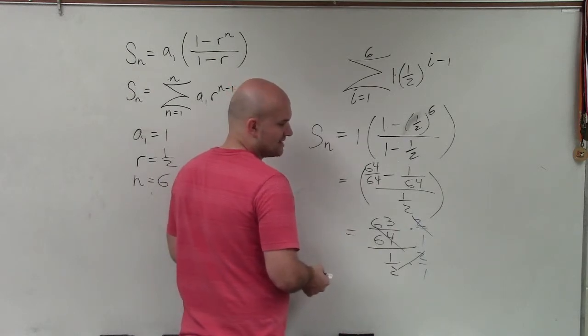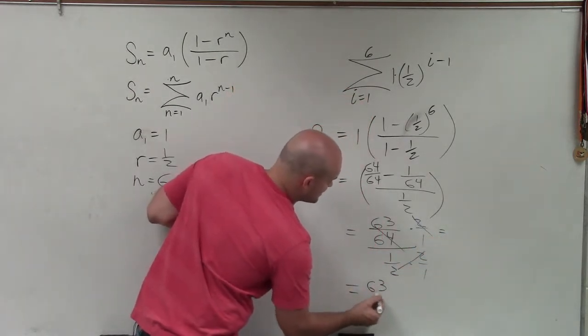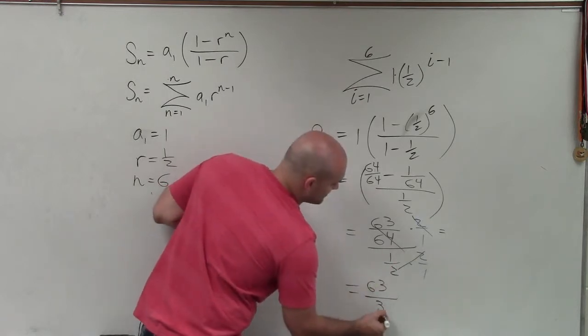I can divide out of 2 on the top and bottom. And I'm left with a final sum of 63 divided by 32.